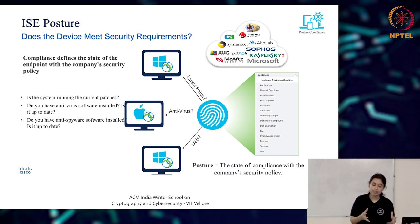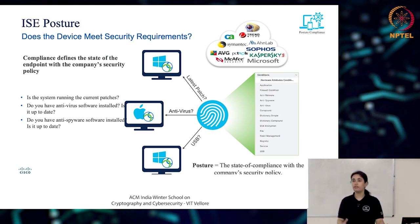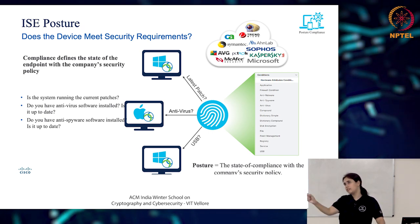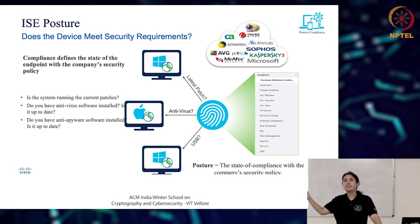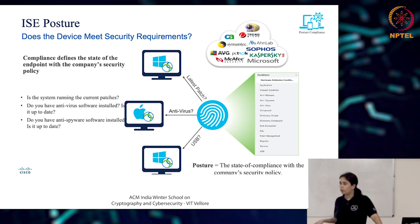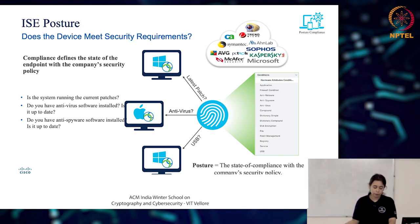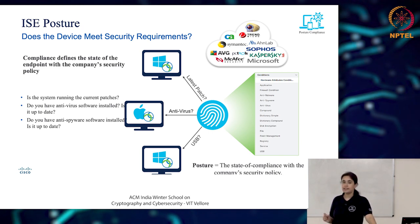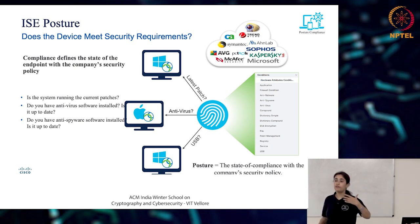ISE implements compliance through the concept of posture. ISE analyzes a particular endpoint — for example, somebody's laptop — and checks what processes are running, what software is installed, what patch version an antivirus is on, whether it's the latest patch. Is the system running current patches? Do you have AV software? Is it up to date? Do you have anti-spyware? You can define a set of rules specifying the posture required for your organization, and then utilize the AAA server to enforce that.